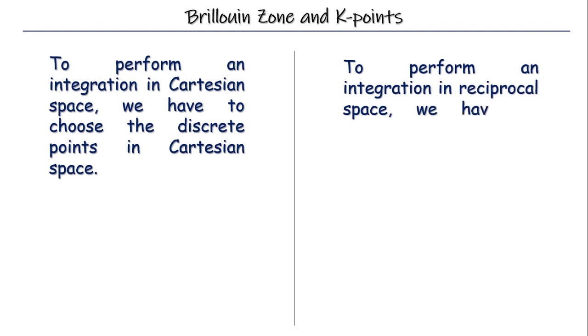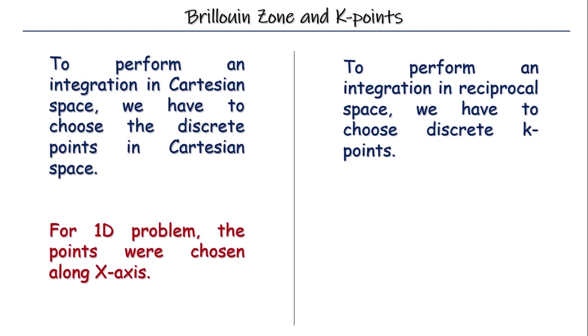Okay. That kx, ky, and kz. In the previous integration, the problem was one-dimensional. And that's why we had to choose discrete points only along x-axis. But for the 3D reciprocal space, the points will be along kx, ky, and kz. I hope you got it.